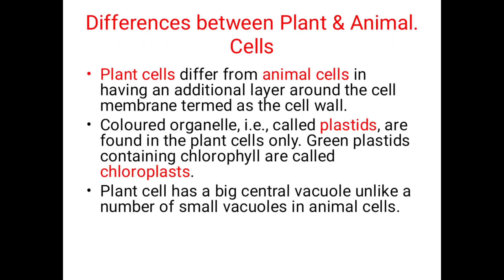Now let's study about the differences between plant and animal cells. Plant cells differ from animal cells in having an additional layer around the cell membrane, which is termed as cell wall. Colored organelles called plastids are found in plant cells only. Green plastids containing chlorophyll are called chloroplasts. Plant cells have a big central vacuole, unlike the number of small vacuoles in animal cells.